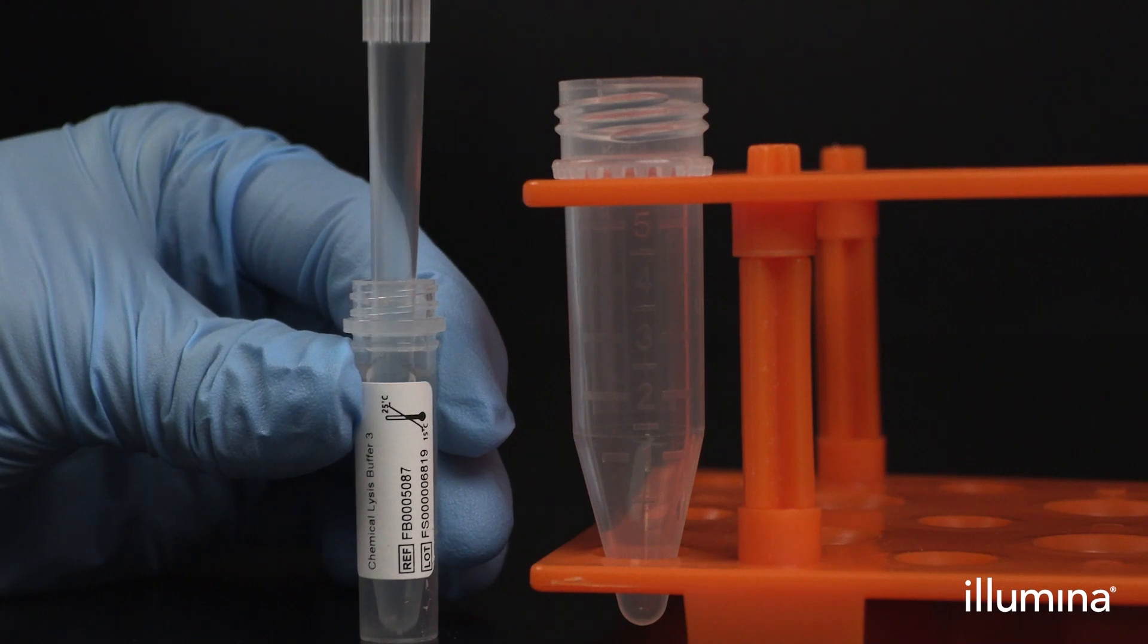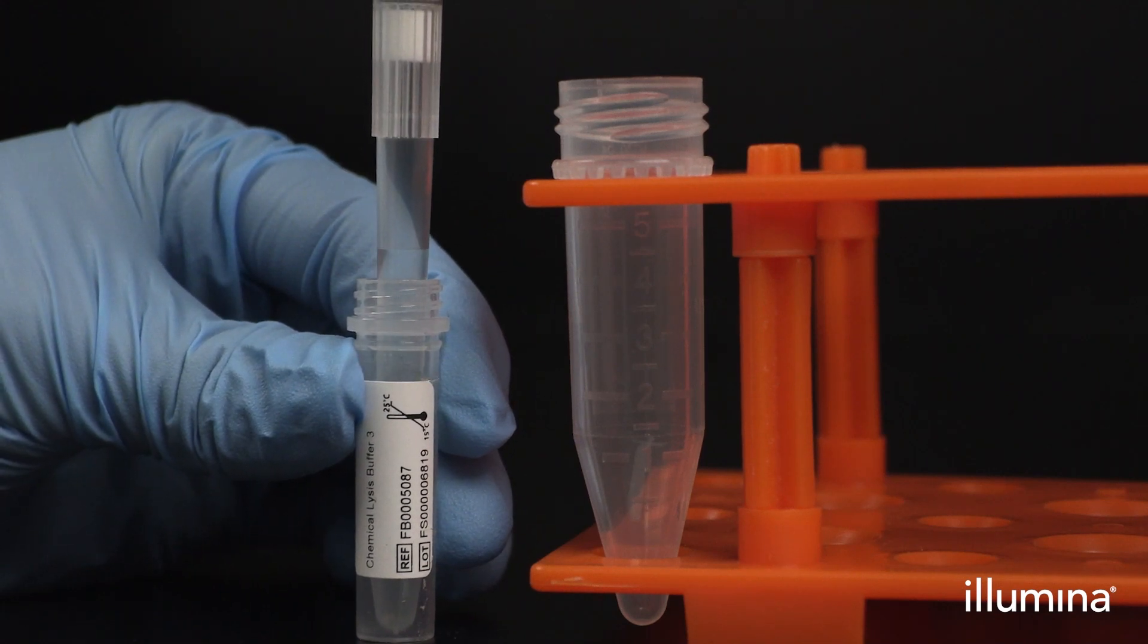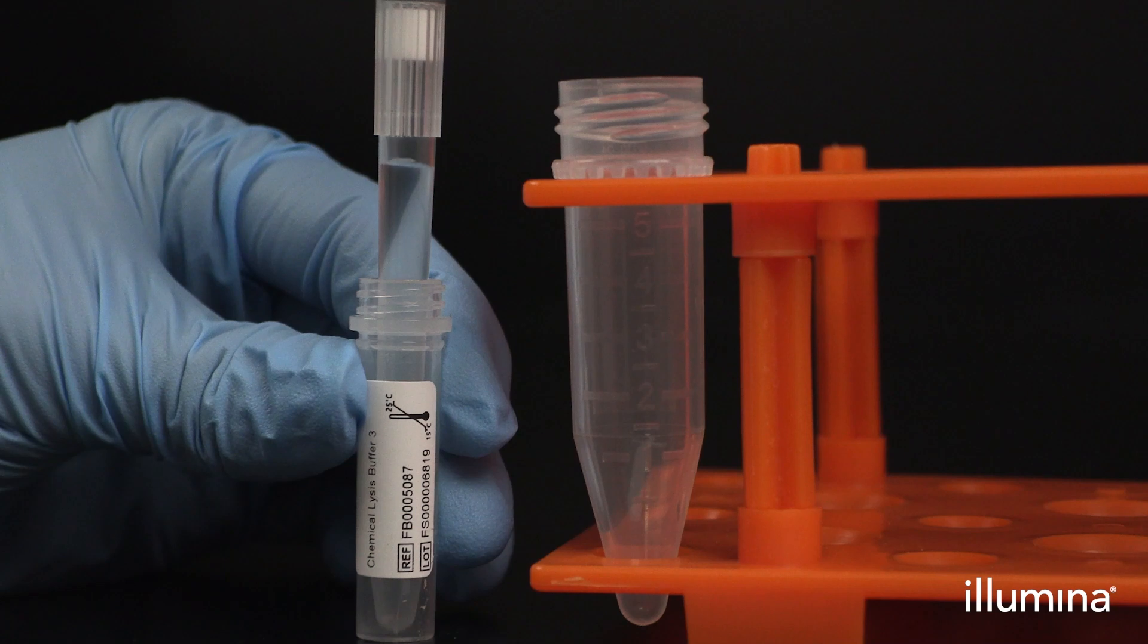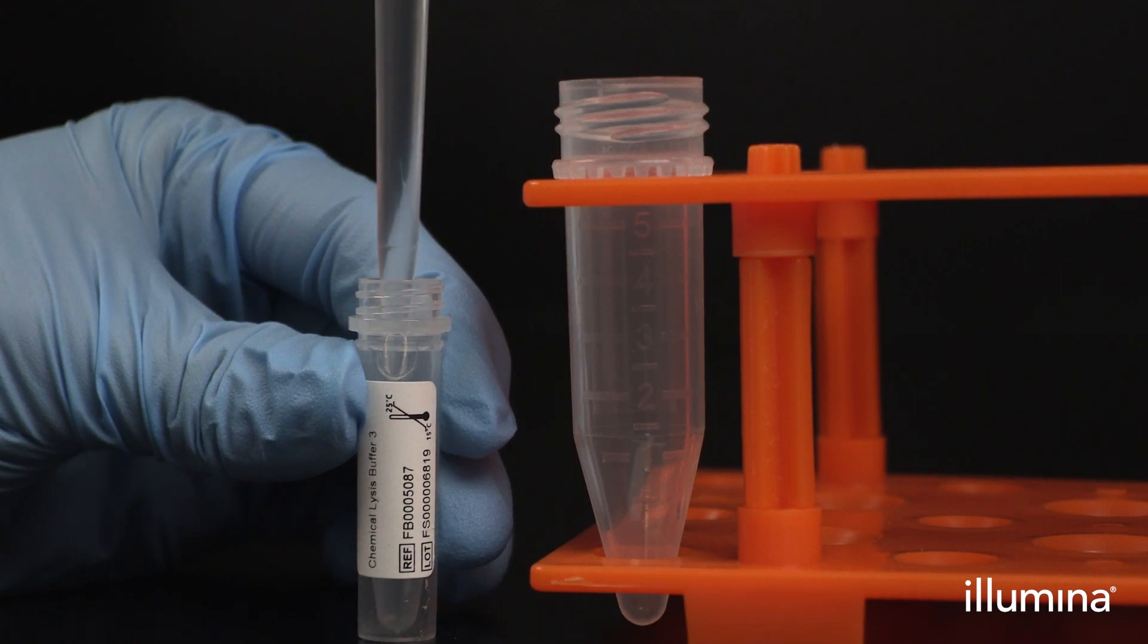Aliquot 840 microliters of CLB3 into a 5 ml sterile, PCR clean and emulsion safe tube for each sample being processed.